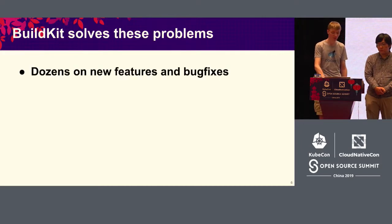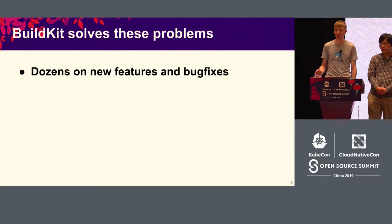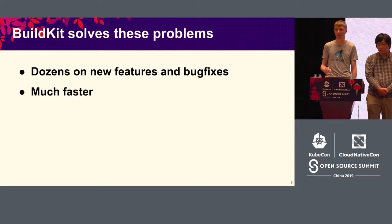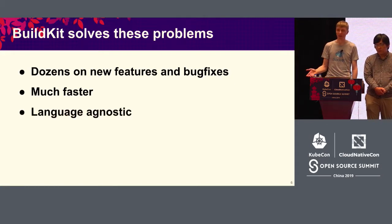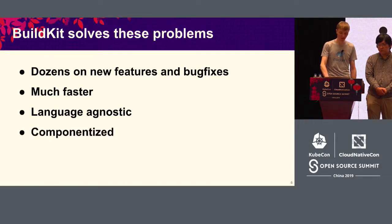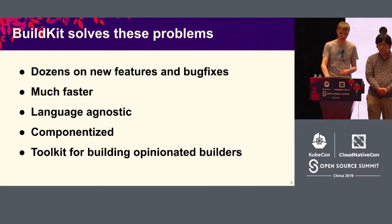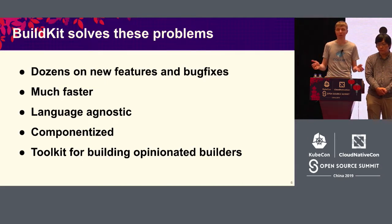BuildKit is made to solve all of those issues. It comes with dozens of new features and bug fixes. It's way faster, we have better caching, we can parallelize stuff. It's not specific to Dockerfiles only anymore — you can basically build almost any language and dynamically load the language definition with a Docker image. It's properly componentized, so the old Dockerfile part is completely separate from BuildKit core. It's more like a toolkit for building other builders. It's very flexible and just solves the hard problems for you.